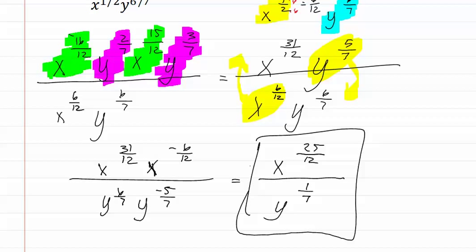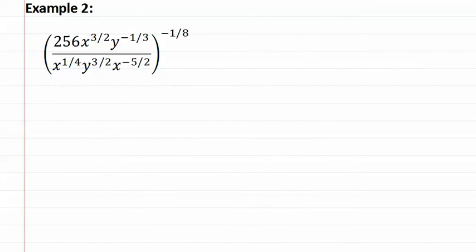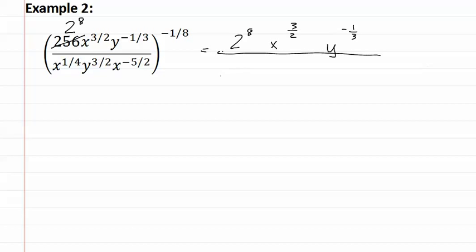Let's look at another example that is a little bit more complex. We rewrite our problem with space, and we take the number 256 and turn it into its prime factorization, which is two to the eighth. So we have two to the eighth, x to the three-halves, y to the negative one-third, over x to the one-fourth, y to the three-halves, and x to the negative five-halves — and all of this is to the negative one-eighth.